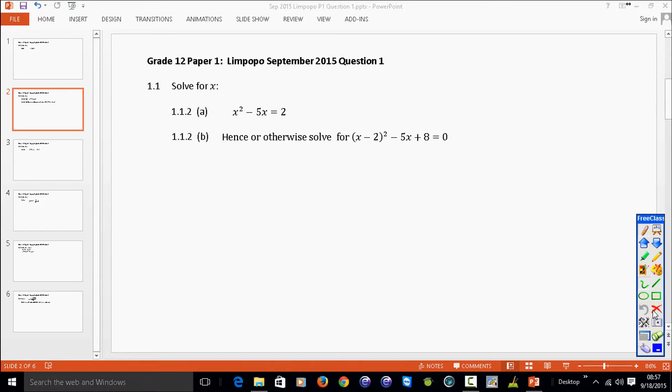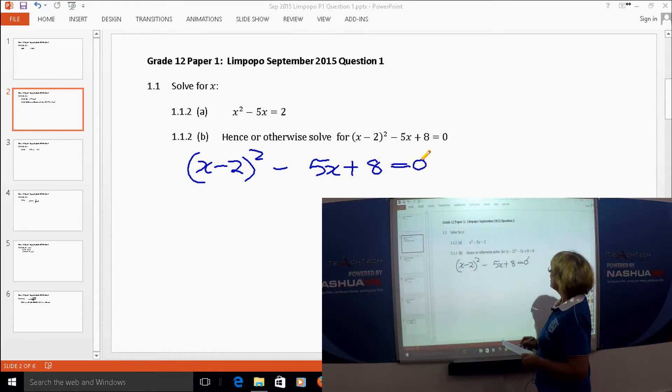Let's rewrite this. Well, it's x minus 2 squared minus 5x plus 8 equal to 0. Somehow we must make it look like the one that we just worked with.